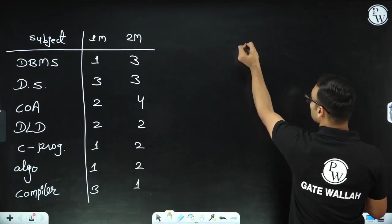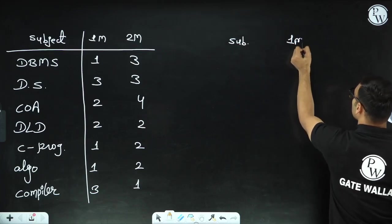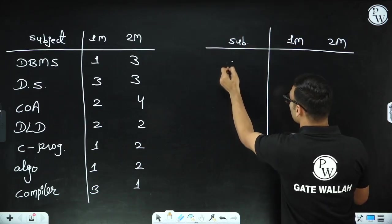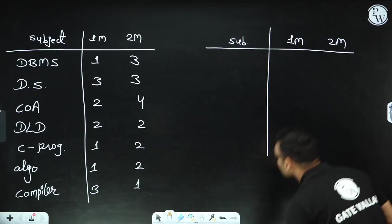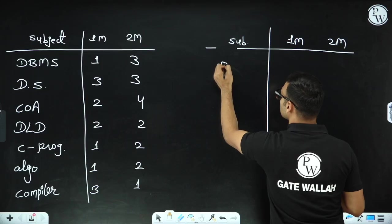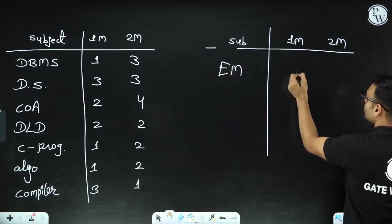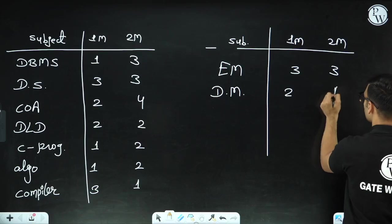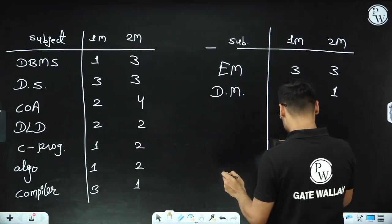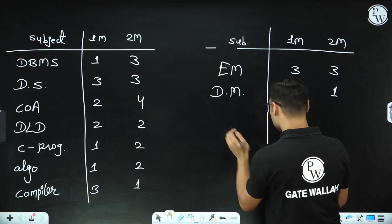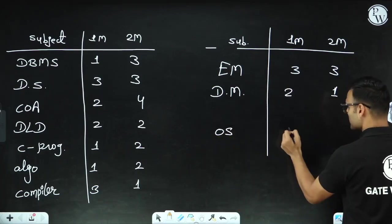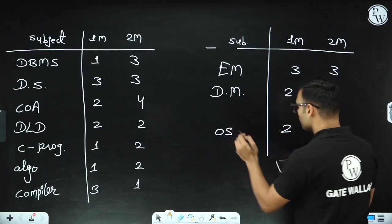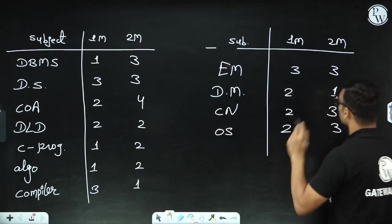Let me give you another table for other courses - one-mark and two-mark. Engineering Mathematics had three and three, total six questions. Discrete Mathematics had two questions - one one-mark and one two-mark. Operating System had three two-mark questions and two one-mark questions. Computer Networks had five questions - two and three. This is the data I have received.